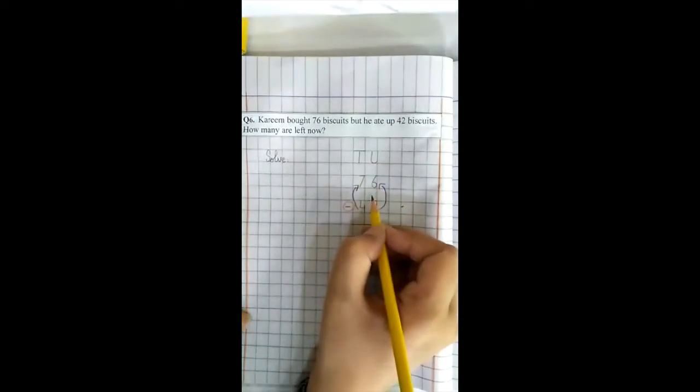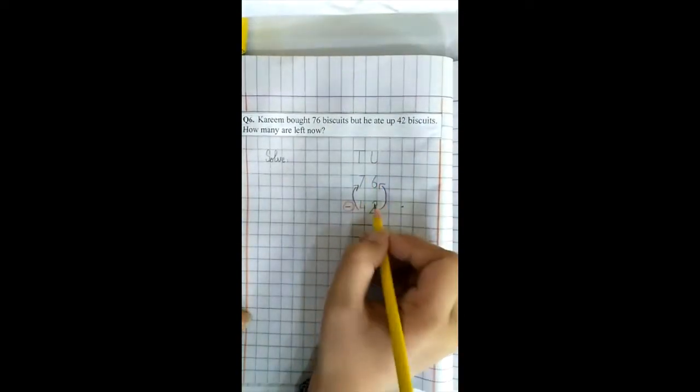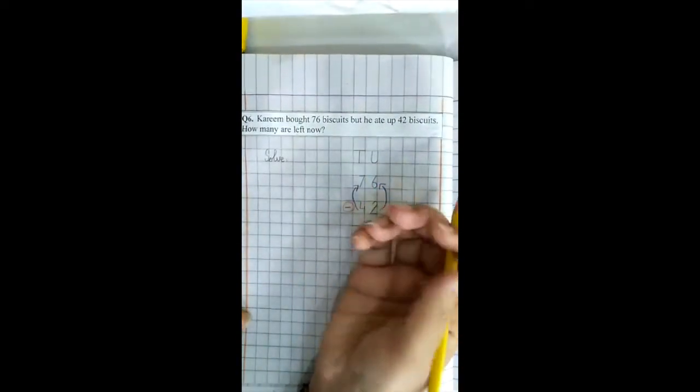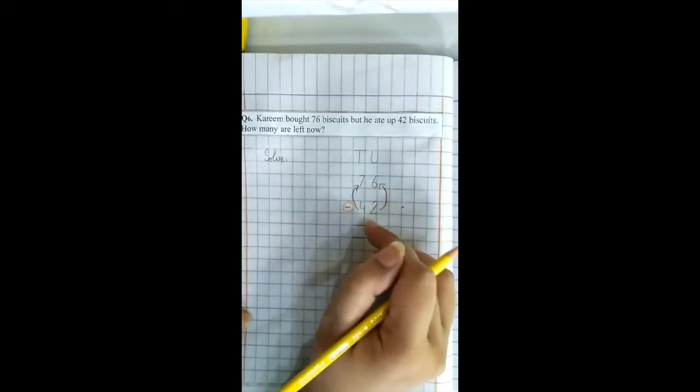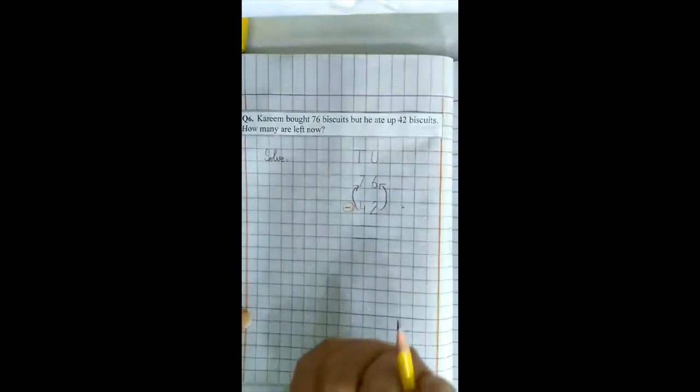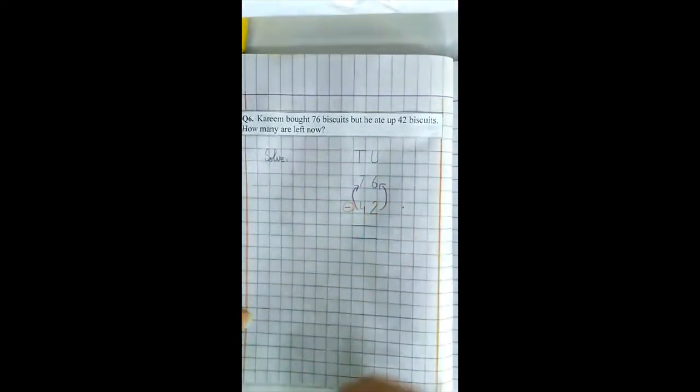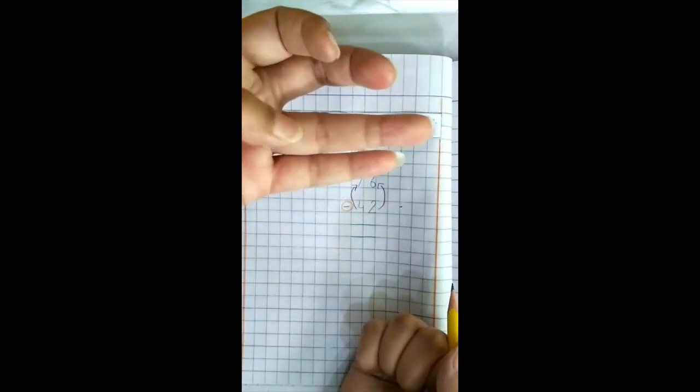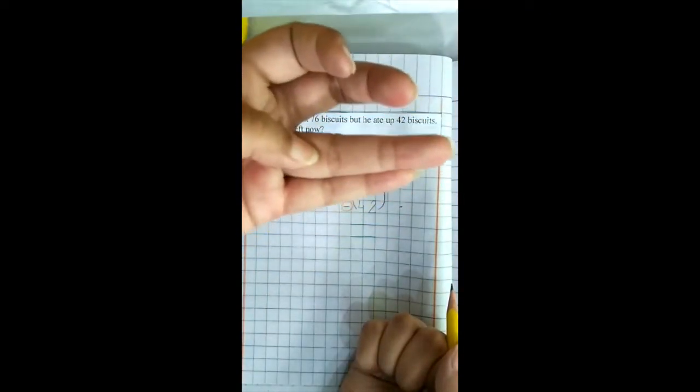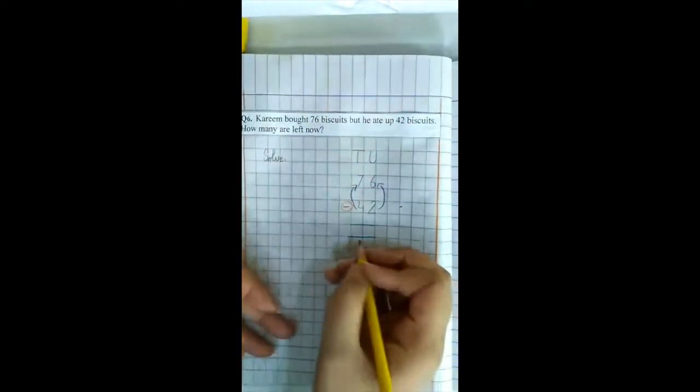Now we start under the unit. Minus کے question میں ہمیشہ ہم small number کو hand میں catch کرتے ہیں اور big number تک ہم count کرتے ہیں. Now catch two in your hand. ہم نے اپنے hand میں two کو catch کیا. Three, four, five, six. What is the answer? کونسی position پہ ہمارا six آیا؟ So we write here four.